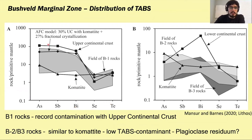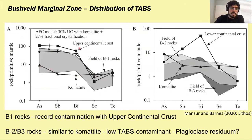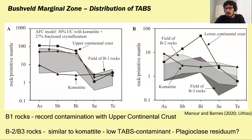Using an upper continental crust reference, the slightly chalcophile elements are enriched in crust relative to the more chalcophile elements. Some of our B1 marginal rocks show a clear sign of upper continental crust assimilation, falling between a more primitive liquid like komatiite and the upper continental crust — we can model them with a mixture of about 30% upper crust with more primitive-like liquids. The B2 and B3 rocks show more flattened shapes closer to primitive mantle signatures, with perhaps some bismuth anomalies suggesting lower crust assimilation, but they are generally more primitive-like.